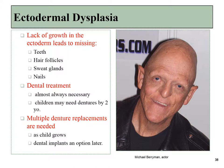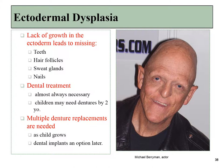Ectodermal dysplasia is a failure of the ectoderm to proliferate as fast as it should — not a complete absence but a lack of excessive growth in certain regions such as the placodes forming teeth, hair follicles, sweat glands, and fingernails, all of which form by invagination following rapid ectodermal growth. For patients with ectodermal dysplasia, dental treatment is necessary. Children may need dentures starting by two years of age, replaced as the face grows. Once the face is more or less done growing, dental implants may become an option.